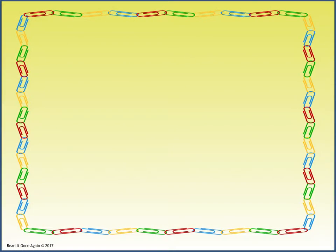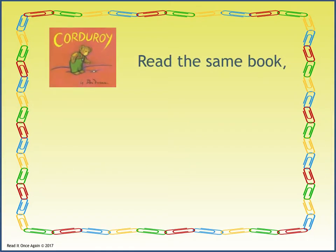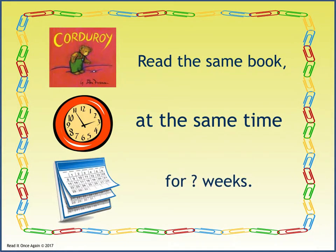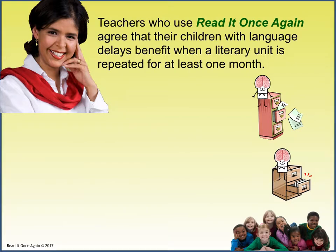Here is another Read It Once Again formula for success: read the same book at the same time for a set number of weeks. The number of weeks is determined by the age and the ability of the child. Younger children, or those with lower cognitive abilities, should plan to spend a month on each storybook unit. Most three- and four-year-olds with language delays can easily spend one month on each storybook unit. If you are using this curriculum for an entire class of typically developing children, you can shorten the time period to meet their needs.